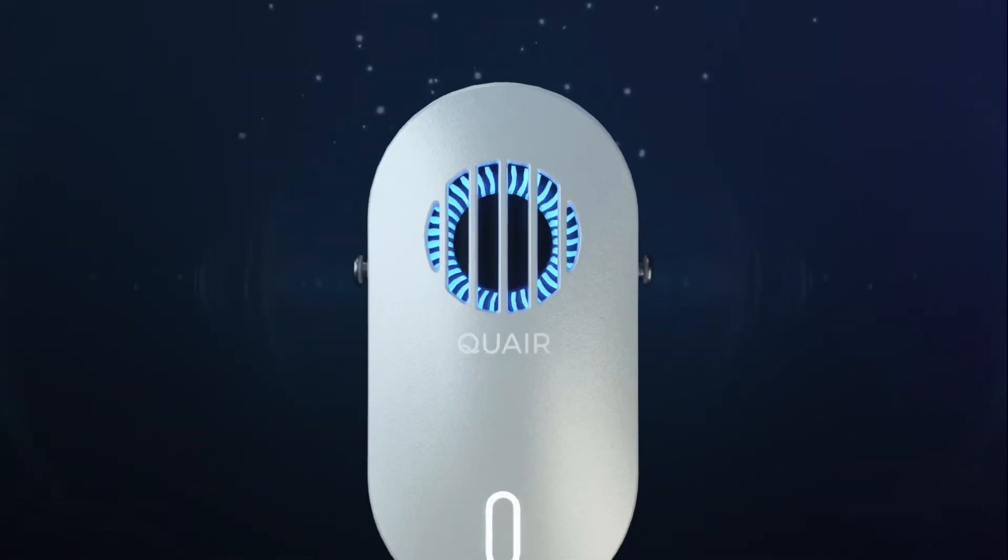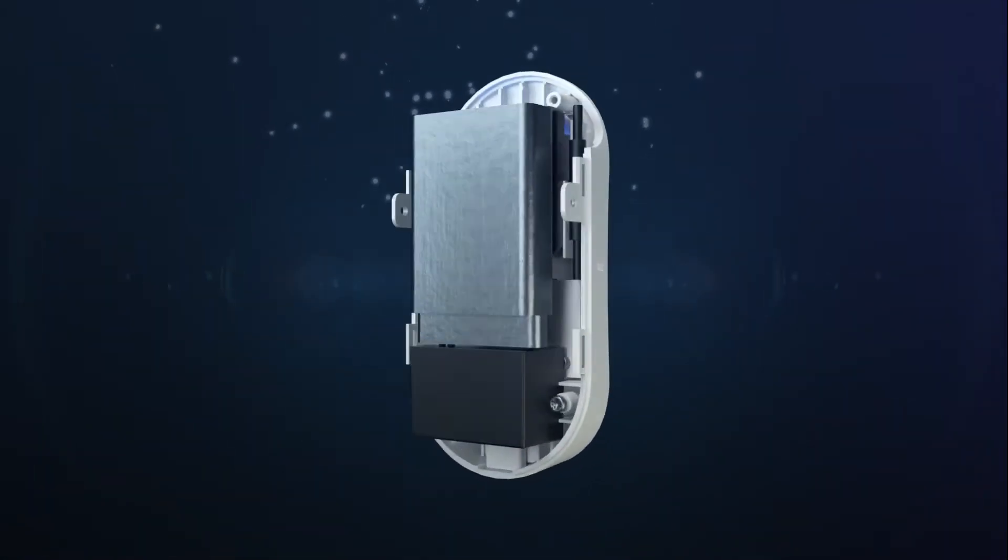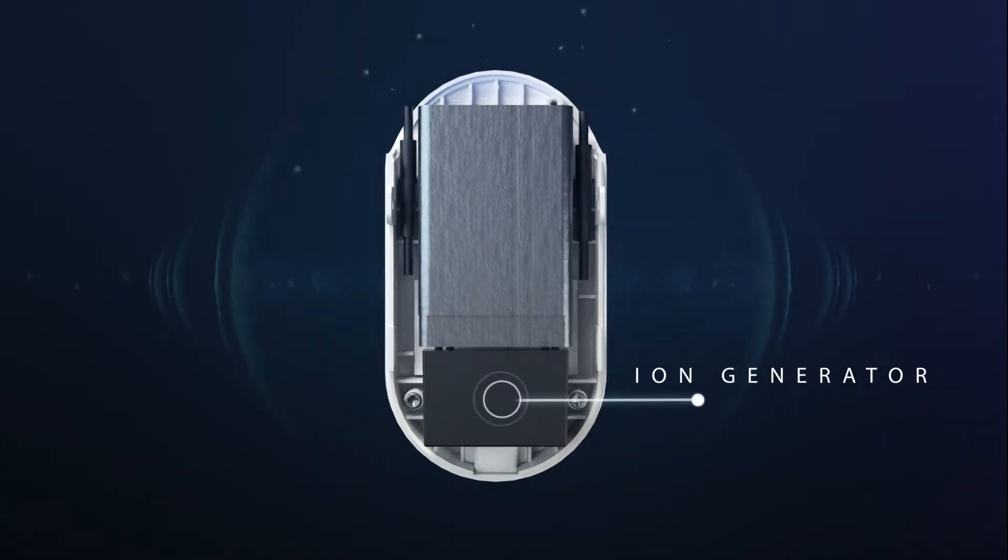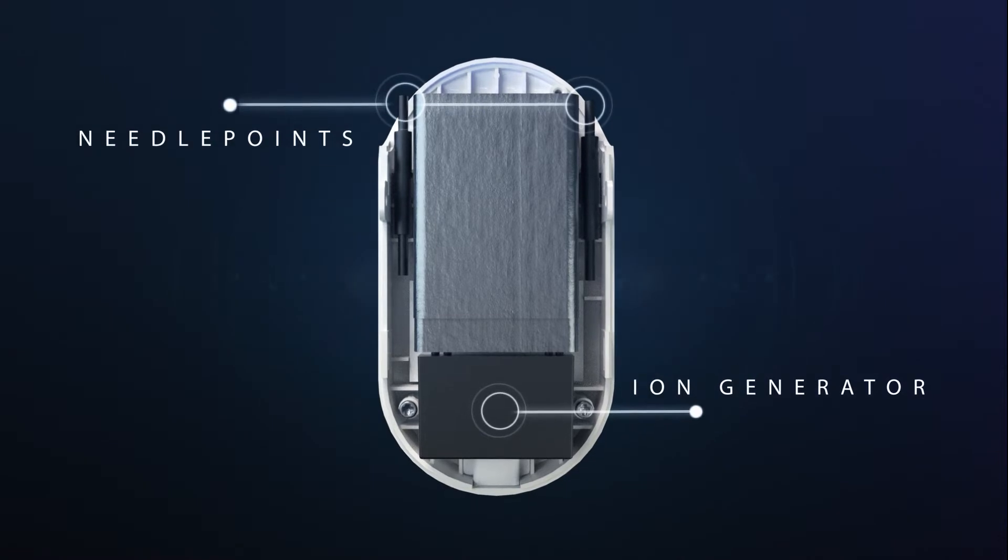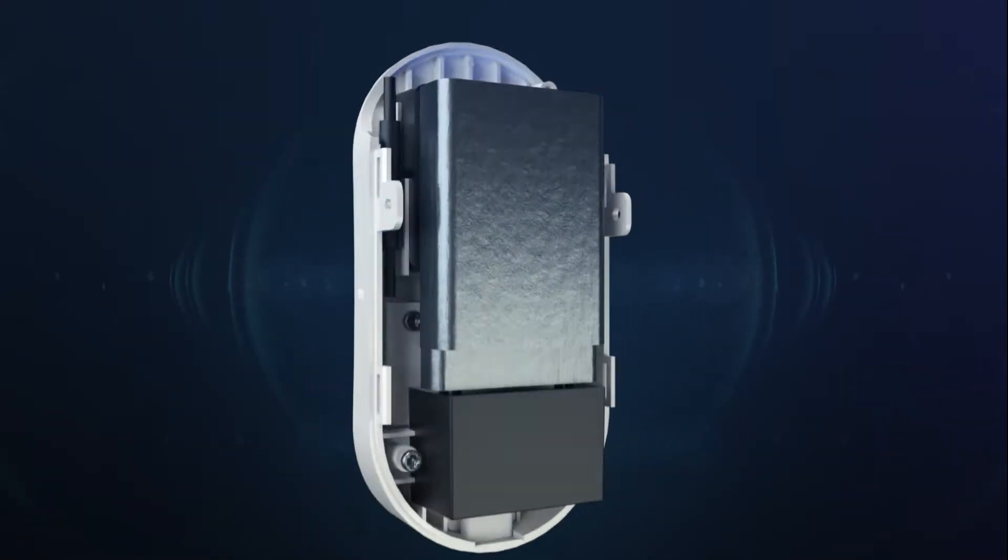So how can bipolar ionization protect us from these tiny particles? Bipolar ionization is an air purification technology that creates and releases positive and negative ions into the air to neutralize airborne contaminants.